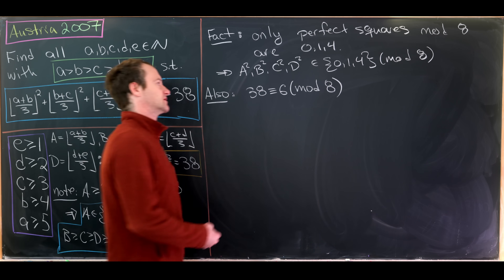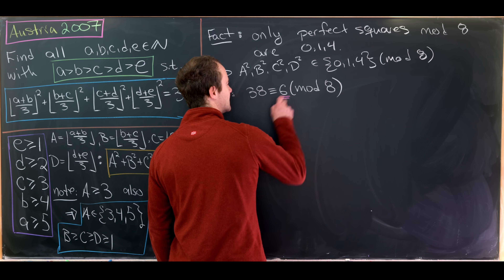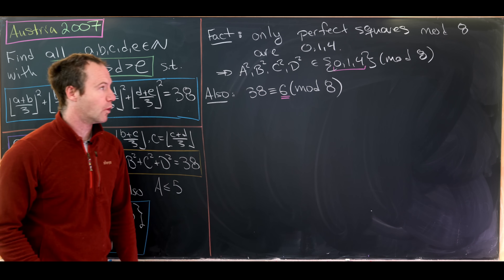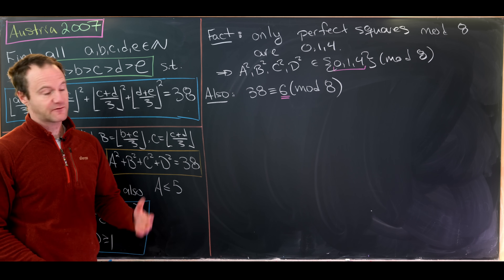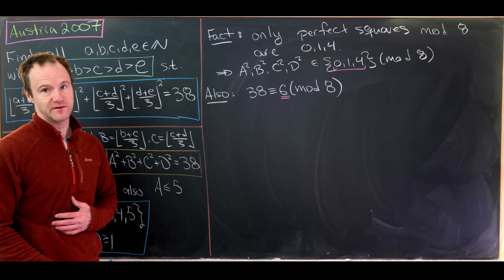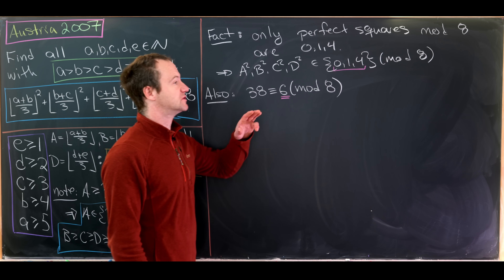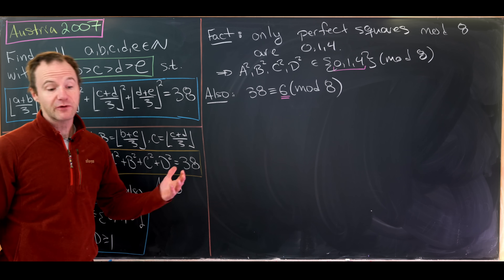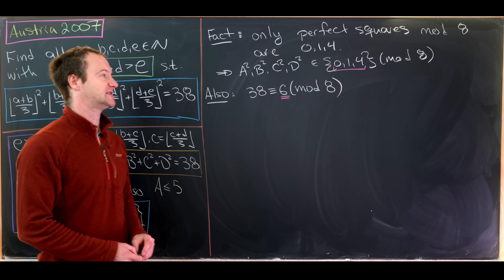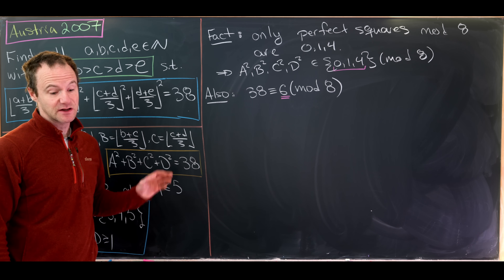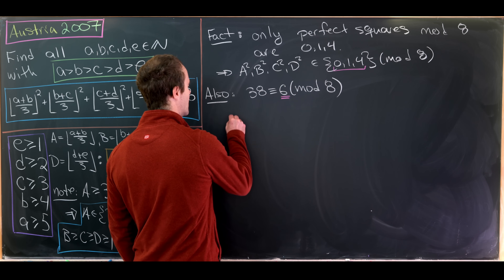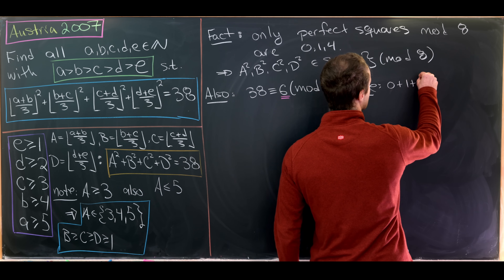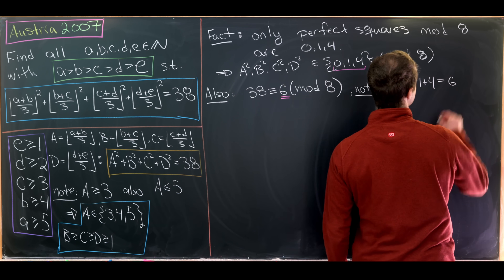We want to achieve 6 mod 8 by adding exactly 4 numbers, each from {0, 1, 4}. There is clearly only one way to do that: 0 + 1 + 1 + 4 = 6.